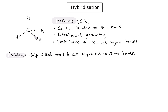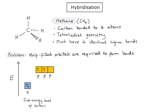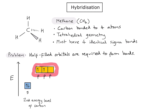If I take a look at the orbital box diagram for carbon, focusing on the second energy level and ignoring the 1s orbital, I can see the 2s orbital which has two electrons, and then the 2p orbitals, of which only two contain one electron each.